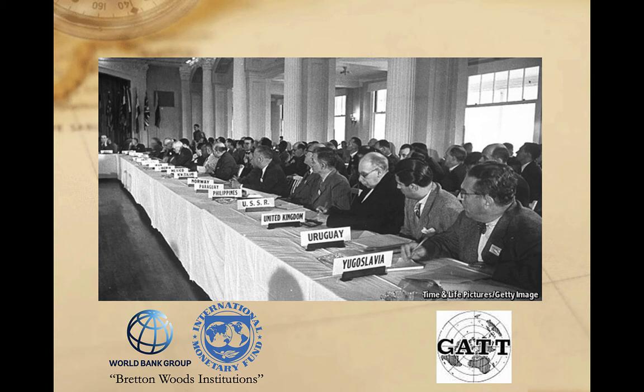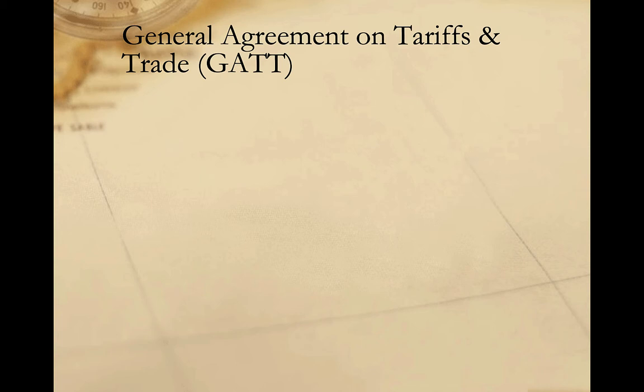As the only multilateral institution dealing with trade issues, the GATT became the natural forum for countries to discuss trade disputes and to negotiate multilateral agreements. As a result, membership in GATT quickly expanded from the original eight members in 1947 to 123 by the time the agreement concluded in 1994. To be clear, GATT was not a formal organization — it had no headquarters, no permanent staff, or any of the other markers we normally associate with international organizations. Rather, it was an umbrella agreement to govern international trade talks.